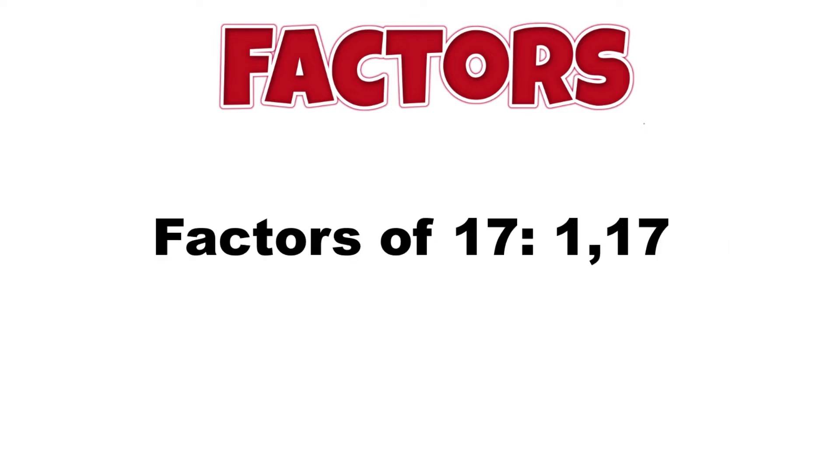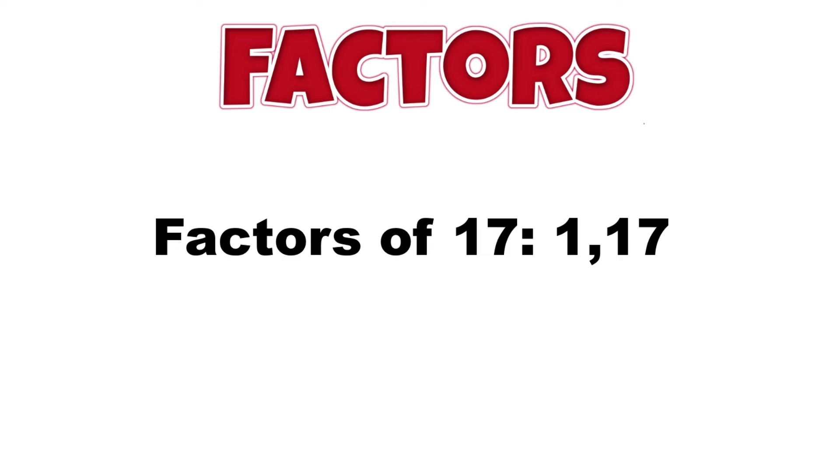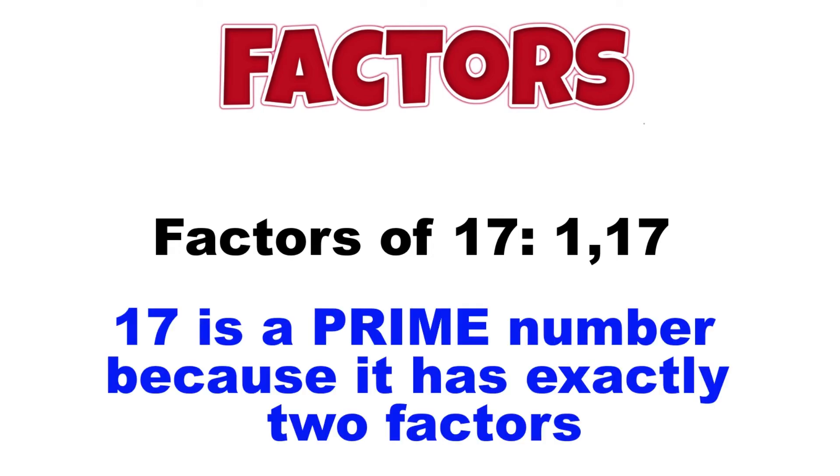Some numbers, like 17, only have two factors. 1 and 17 are the only whole numbers you can multiply together to get 17. When a number has exactly two factors and only two factors, it's called a prime number.